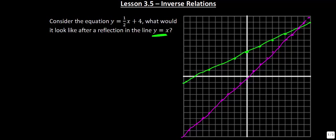What's actually going to happen when you take the inverse of something? Basically, all these ordered pairs are just reversed. So if this ordered pair right here is at (0, 4), the inverse of it is going to be at (4, 0).